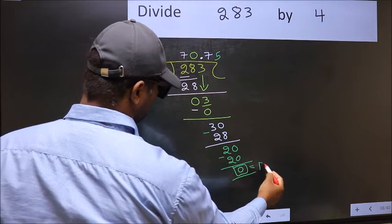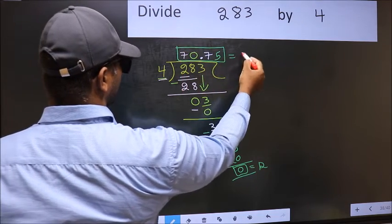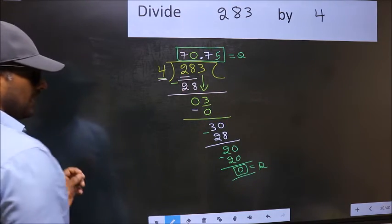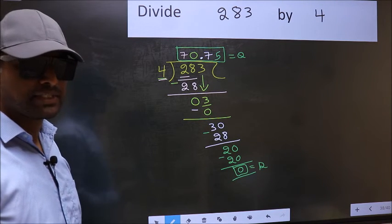So, this is our remainder, and this is our quotient. Did you understand where the mistake happens? You should not do that mistake.